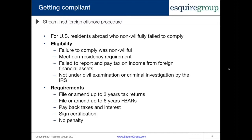The streamlined foreign offshore procedure is for U.S. residents abroad who non-willfully failed to comply. Non-willful is a very key term — it essentially means your behavior was unintentional, not done on purpose. Simple examples include receiving false tax advice from a CPA who told you that you didn't need to disclose certain information, or simply not knowing that these forms existed or that you had a filing requirement.